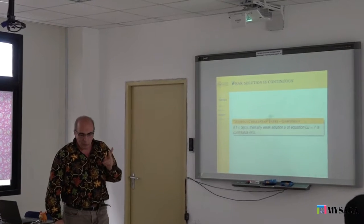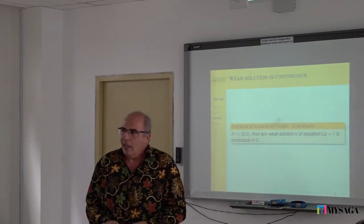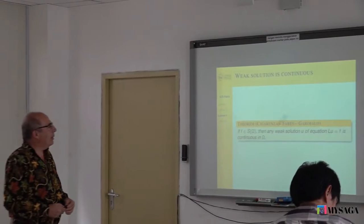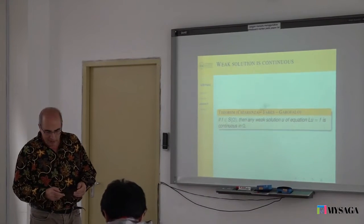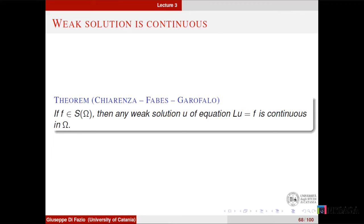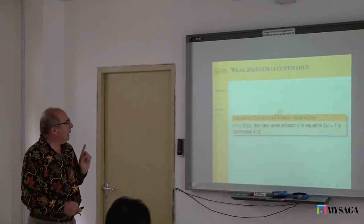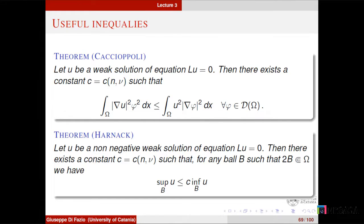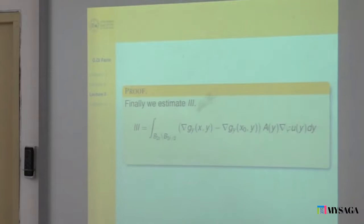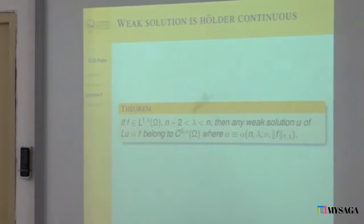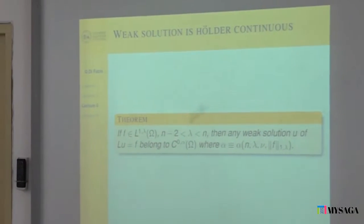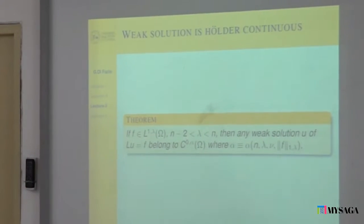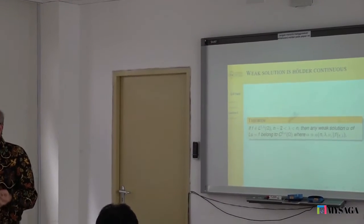I would like to remember the two main points of yesterday. The first important result is about the continuity of the weak solution of our equation. This continuity has been proven by assuming the right-hand side is in the Stummel class, which is much more general than the usual classical assumption. There is just a slight improvement because the space L1-lambda is contained in the Stummel class.